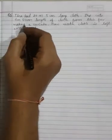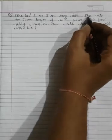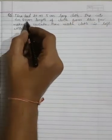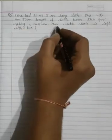Next question is question number 5. Tina had 20 meter 5 centimeter long cloth. She cuts 4 meter 50 centimeter length of cloth from this for making a curtain. How much cloth is left with her?